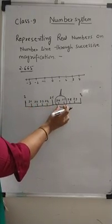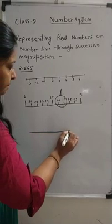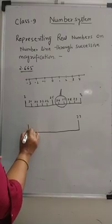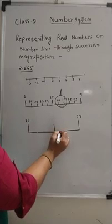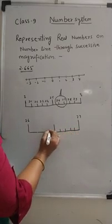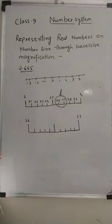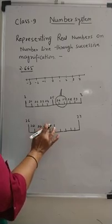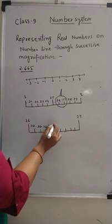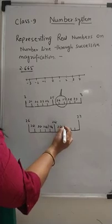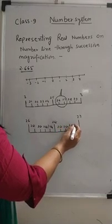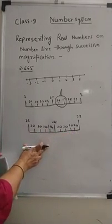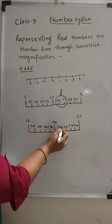We find that this interval is between 2.6 and 2.7, and we divide this interval again into 10 equal parts. The markings will be 2.61, 2.62, 2.63, 2.64, 2.65, 2.66, 2.67, up to 2.69. Again, take a magnifying glass and look at this portion — you will find that this number will lie between 2.66 and 2.67.